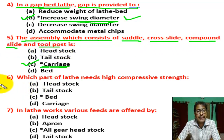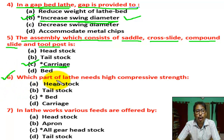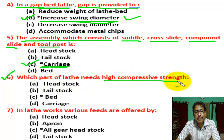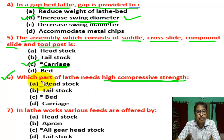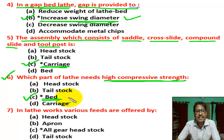Question number six: which part of the lathe needs high compressive strength? There are four options. Correct answer is C — bed. In the lathe, the bed needs high compressive strength.